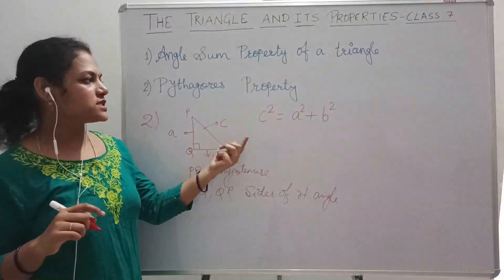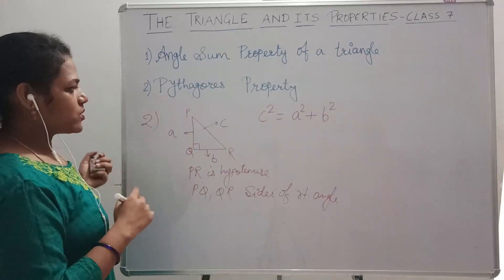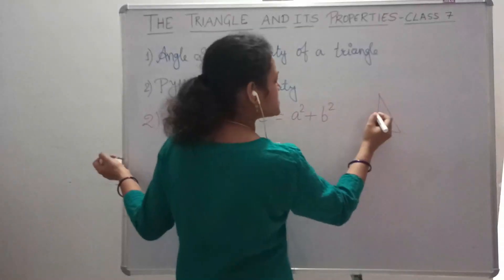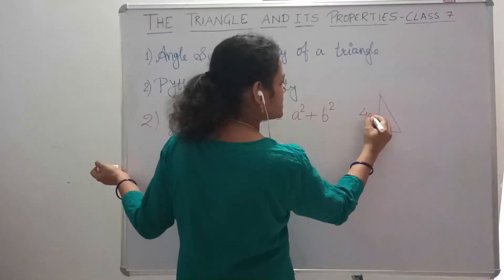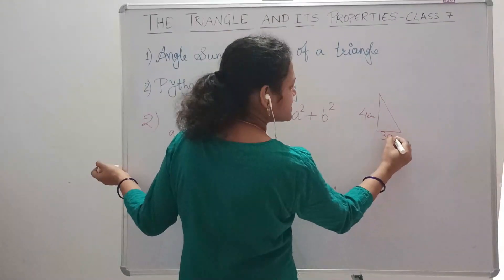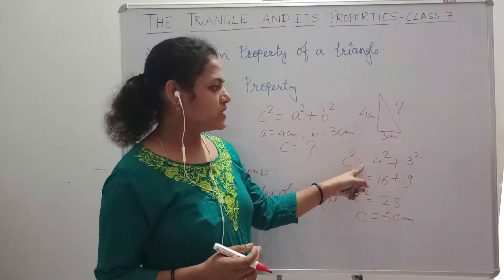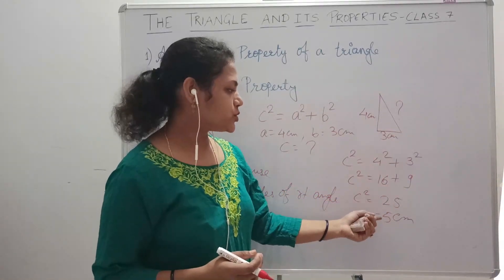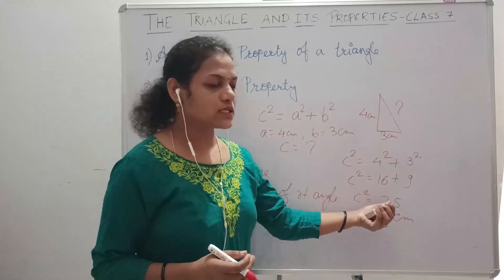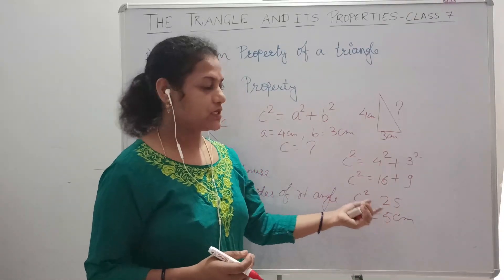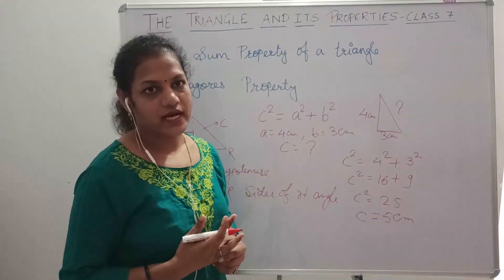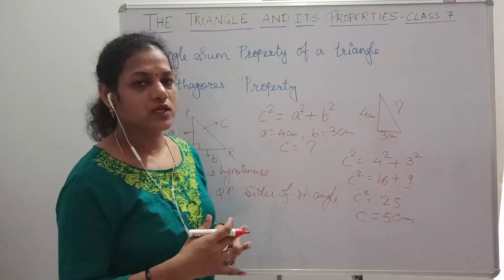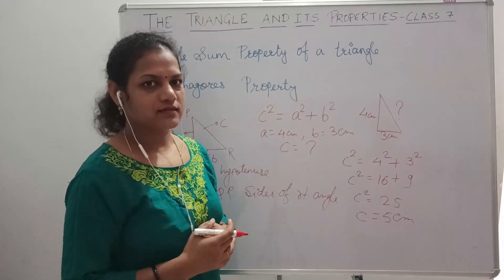The Pythagoras property states that C squared equals A squared plus B squared. For example, if A equals 4 and B equals 3, then C squared equals 16 plus 9, which equals 25. So C equals 5 centimeters. In this way you can find the third side of a right angle triangle. Please watch my other videos as well. Thanks for watching.